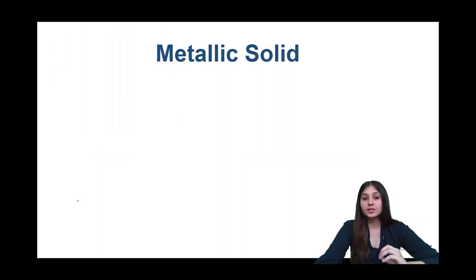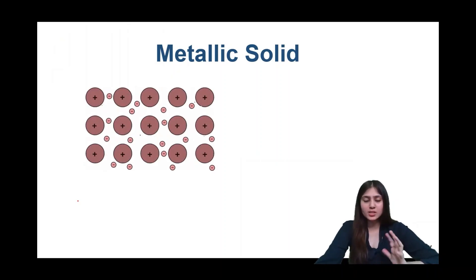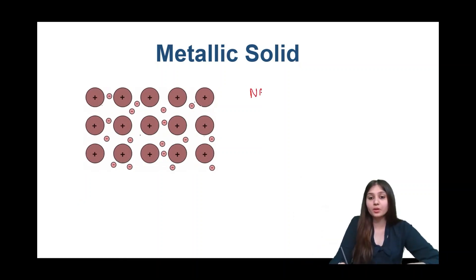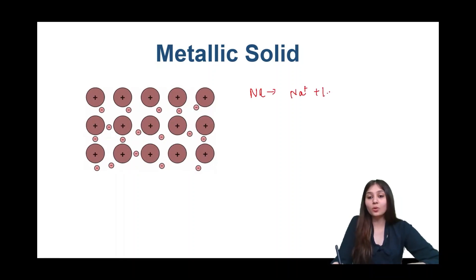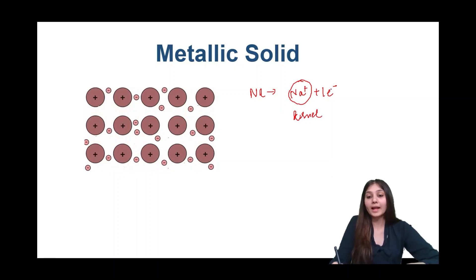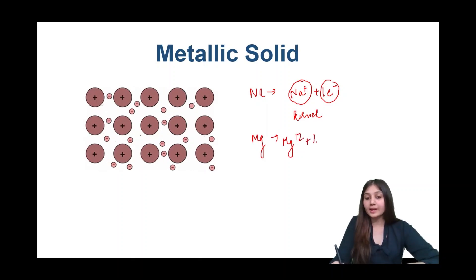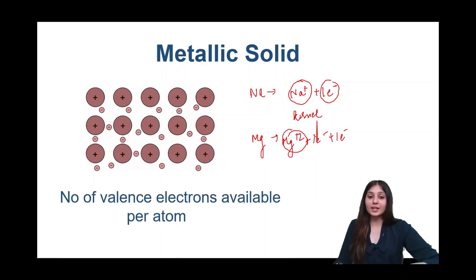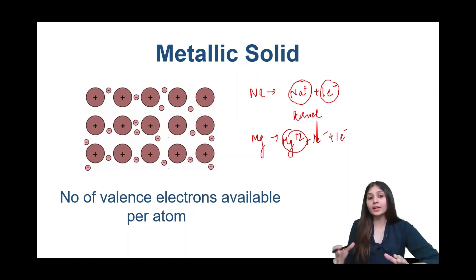Let's talk about metallic solids. Metallic solids have an electron sea model. The positive charges — for example sodium ionizes into sodium⁺ and one electron, called the cation or kernel — and in magnesium we have a magnesium²⁺ cation and two electrons. So in case of metallic solids, we have a number of valence electrons available per atom, and the more electrons we have, the more conduction is going to be there.